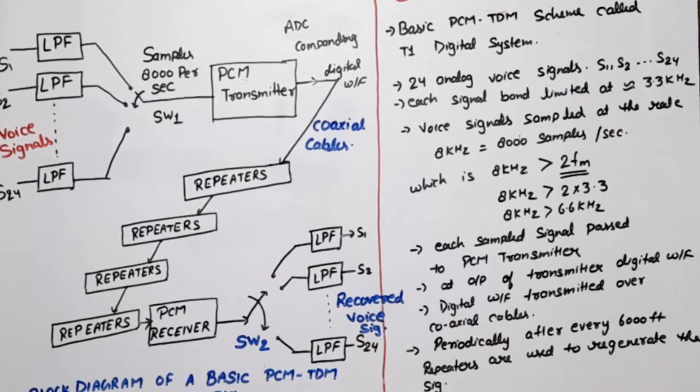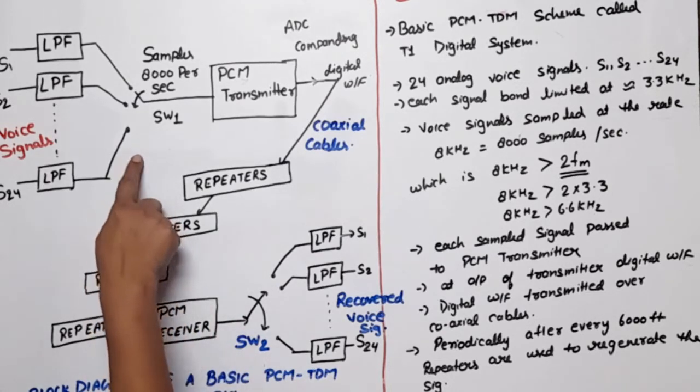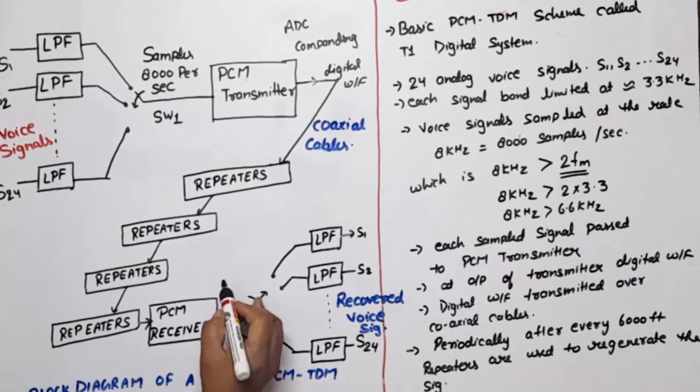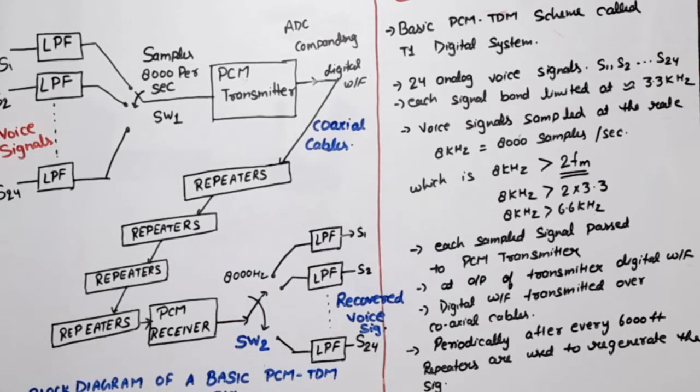After that, our signal goes to a switch, which is a decommutator switch. At the transmitter, the commutator switch worked as a multiplexer; here it works as a demultiplexer. The sampling frequency is the same - 8000 hertz or 8000 samples per second. The output of this switch is passed through low pass filters. All low pass filters are band limited again, and the output is the recovered voice signal, which is in analog form.